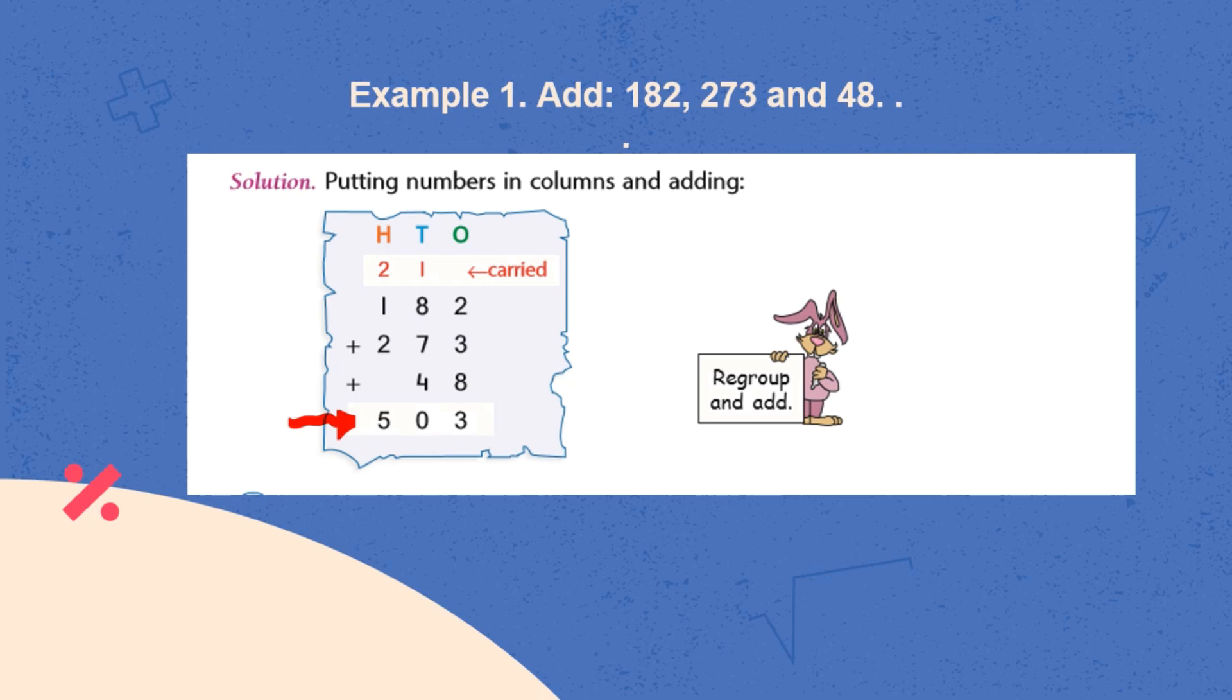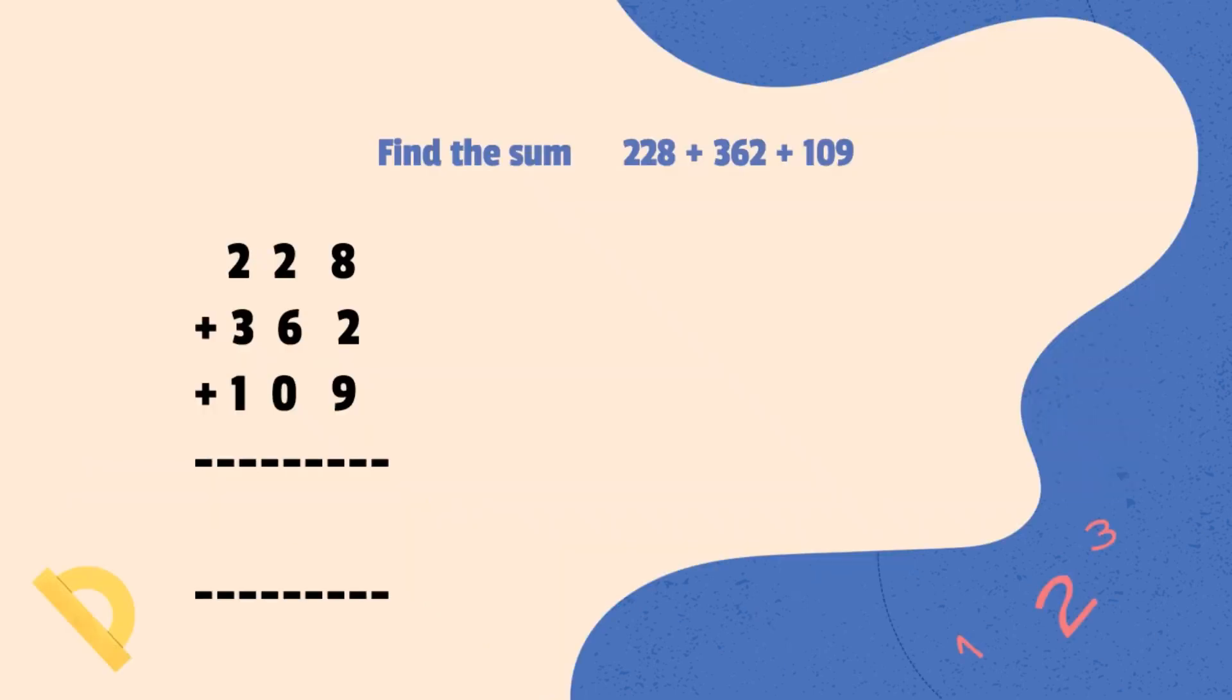To clearly understand how 3 digit addition is done, we will solve one question. Here, we have to find the sum by adding 228, 362 and 109. So, we will start by adding 1's place digit. 8, 2, 9 which is equal to 19. We will write 9 here and 1 will be carry.